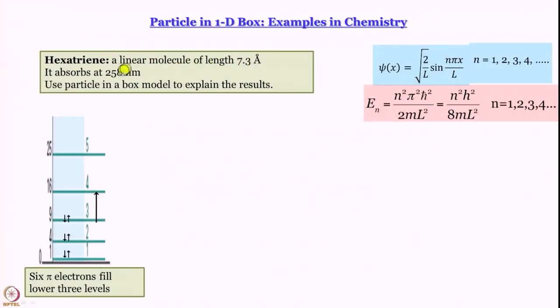Here we are talking about particle in a 1D box. We know what the wave function is, we know what the energies are, and now we want to ask: does it have any practical manifestation? Actually it does. The first example we want to discuss is hexatriene, a conjugated molecule which is linear. You can draw a line from beginning to end and the length is 7.3 angstrom. Hexatriene absorbs at 258 nanometer if you look at the absorption spectrum.